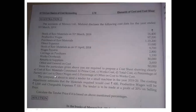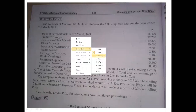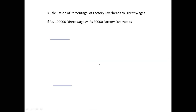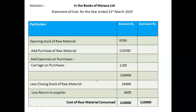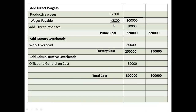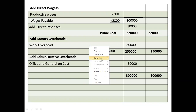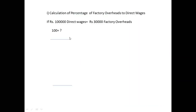First calculation: Percentage of factory on-cost to direct wages. Factory on-cost means factory overhead. Direct wages came to 1,00,000 rupees from the cost sheet, and factory overheads are 30,000 rupees. We calculate: if 1,00,000 direct wages equals 30,000 factory overhead, then 100 equals question mark. Cross multiply: 100 × 30,000 ÷ 1,00,000 = 30%. So factory overhead is 30% of direct wages.